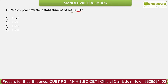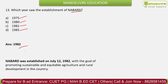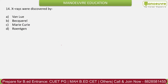Question 13: Which year saw the establishment of NABARD? Options: 1975, 1982, 1985. The correct answer is 1982. NABARD was established on July 12, 1982, with the goal of promoting sustainable and equitable agriculture and rural development in the country.